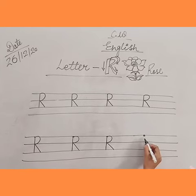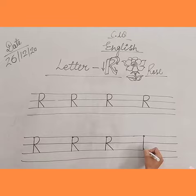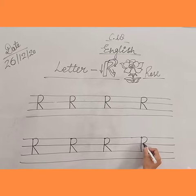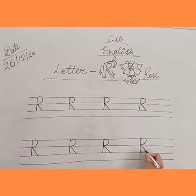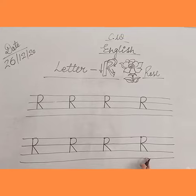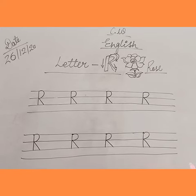Once again, start from the dot and make a standing line to the third line. Then we will make a curve to the middle. After this, we will make a slanting line to the third line. So kids, now we have done letter R — R for rows.